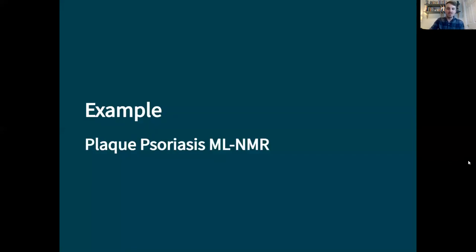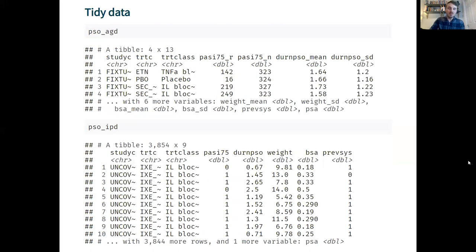Let's apply this to a short example. First we have some aggregate data at the top here from one study with four arms and you can see that we have a count outcome and then we have means and standard deviations and proportions for covariates in each of these study arms. Then we have individual patient data below this, one row per each individual with their outcome and their covariates.